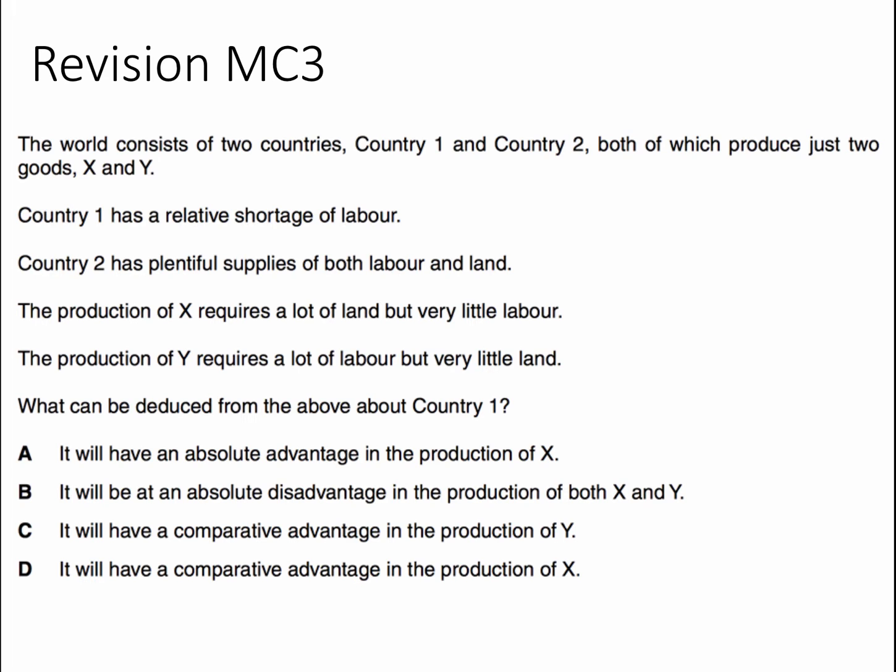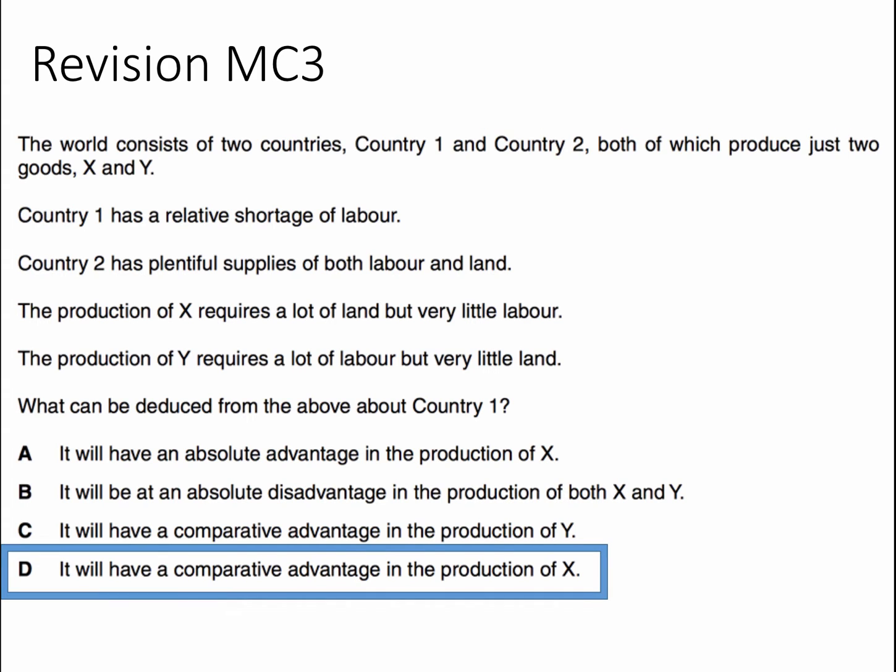Country one has labour shortages, so we expect labour costs to be quite high with wages being driven up. The correct answer is that country one has a comparative advantage in the production of X — the product which requires a lot of land but little labour — which offers the lowest relative opportunity cost. So country one tends to specialise in that product.